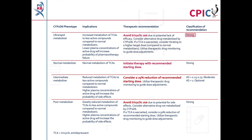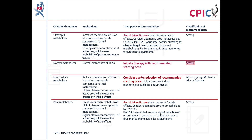This is a strong recommendation. Patients with a CYP2D6 normal metabolizer phenotype will have normal metabolism of TCAs. These patients can begin nortriptyline therapy with the recommended starting dose. This is a strong recommendation.